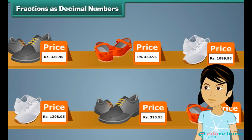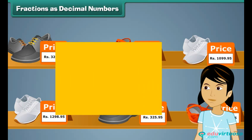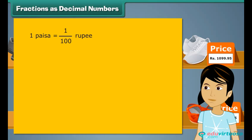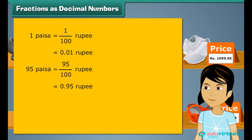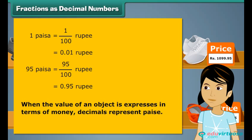Arpita went with her father to buy her school shoes. Prices of footwear in the store were expressed as decimal numbers, and she wondered what the decimals in the prices meant. 100 paise make 1 rupee, so 1 paise is 1 by 100th of a rupee, which can also be written as 0.01 rupee. Therefore, 95 paise form 95 by 100th of a rupee, expressed as 0.95 rupee. The decimals in the footwear prices stood for paise.